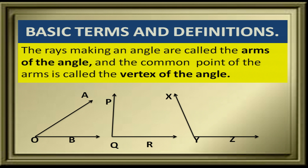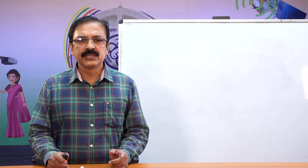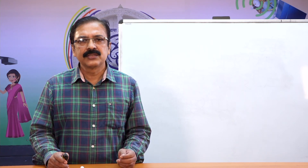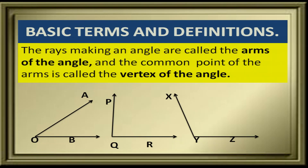The rays OA and OB are the arms of angle AOB; QR and QP are the arms of angle PQR; YZ and YX are the arms of angle XYZ. The common point from which these rays originate is called the vertex of the angle. In the first angle, the vertex is O; in the second, the vertex is Q; and in the third, the vertex is Y.